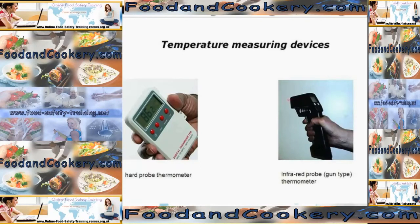The only way to check that food has been heated to 75 degrees Celsius is by using a temperature measuring device. There are two examples shown here. The one on the left is most commonly used — it has an attachment you insert into the core, the thickest part of the food, to confirm it has reached 75 degrees Celsius. Beware of the infrared probe, however, because that only registers surface temperature. These hard probe thermometers are also called thermocouple probes — they can be calibrated and are tip sensitive.